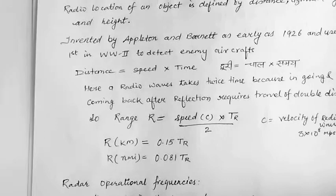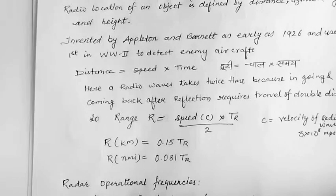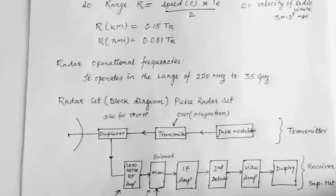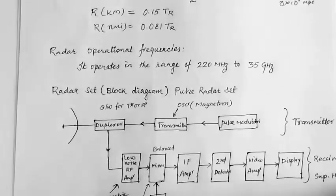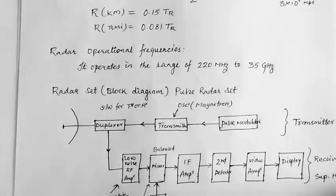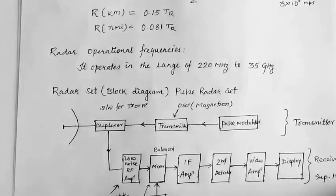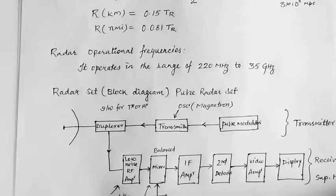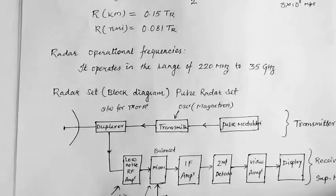The second thing is in what range of frequency radar operates. There is not a limit of the frequency for radar. It uses a very huge range of frequency. It operates in the range of 220 megahertz to 35 gigahertz.